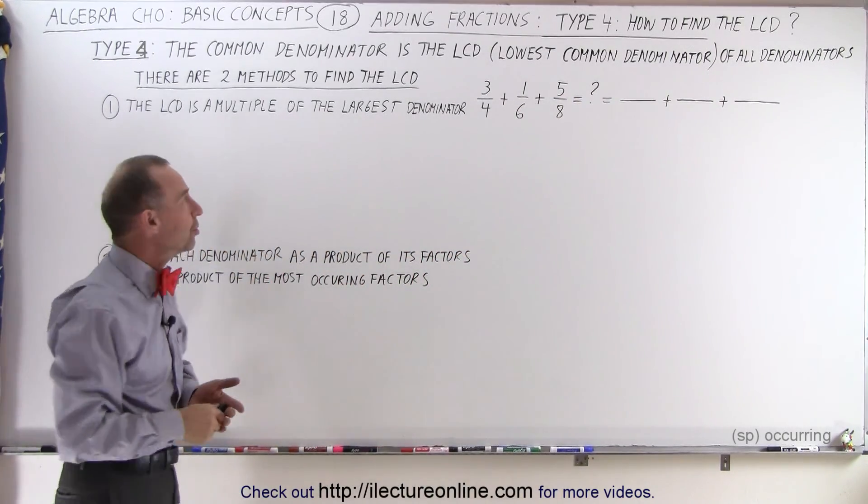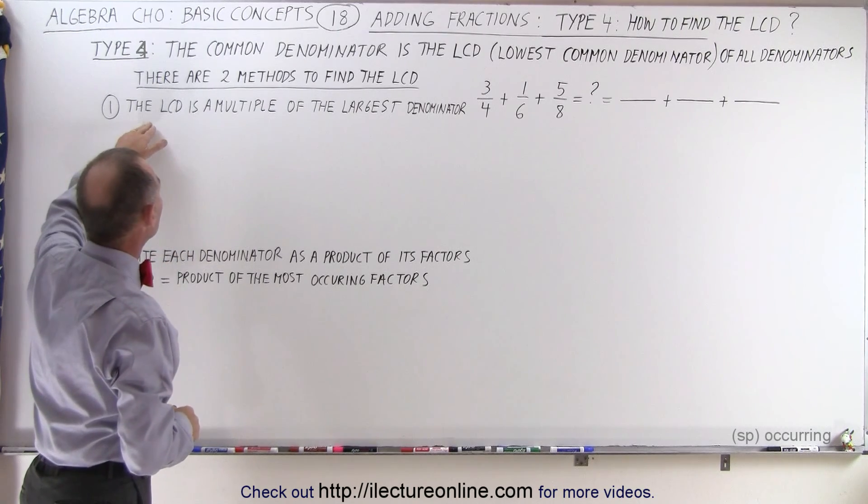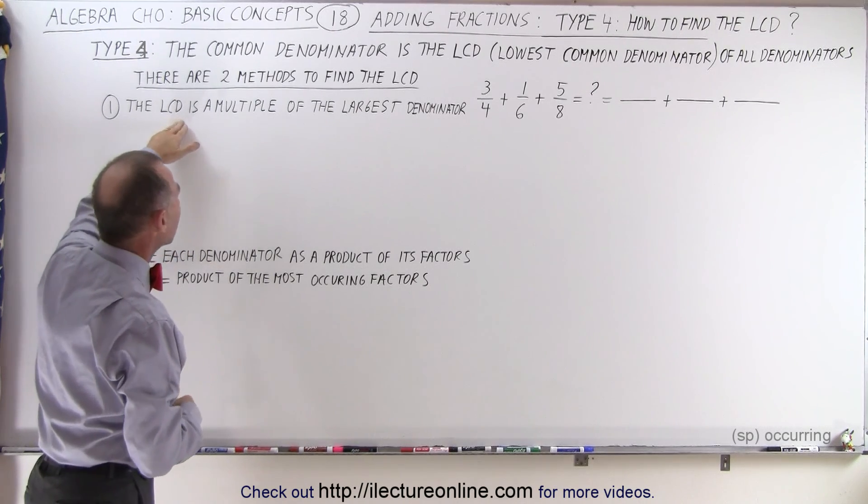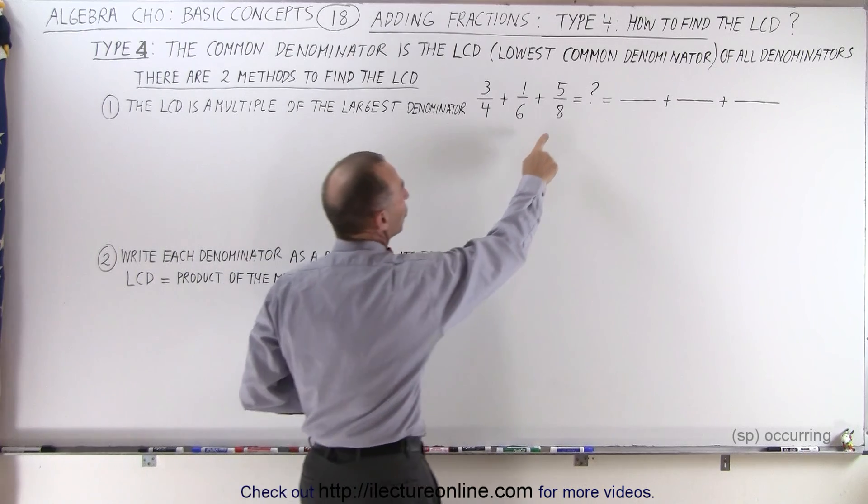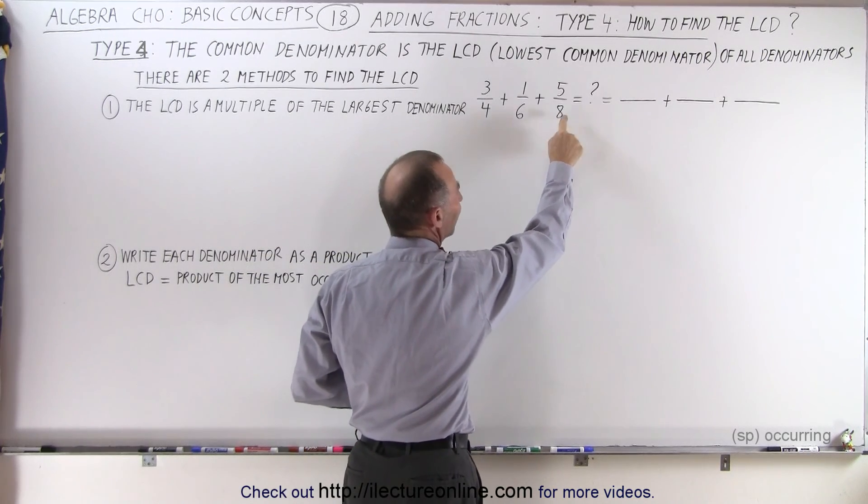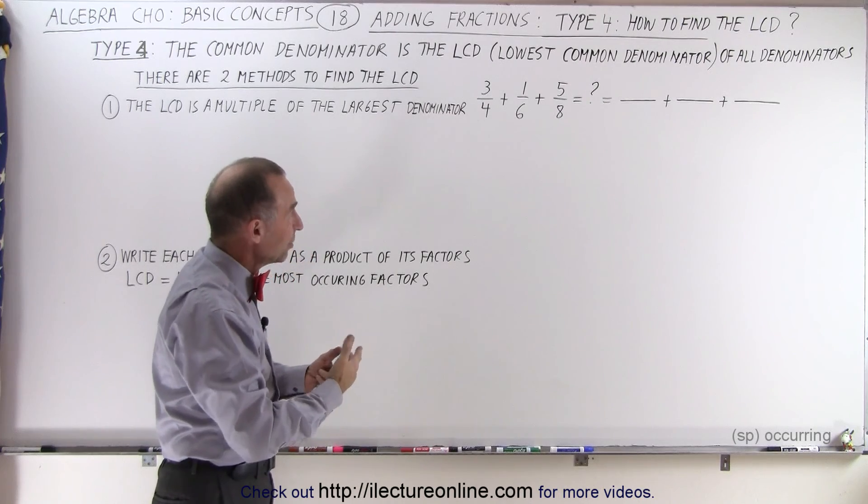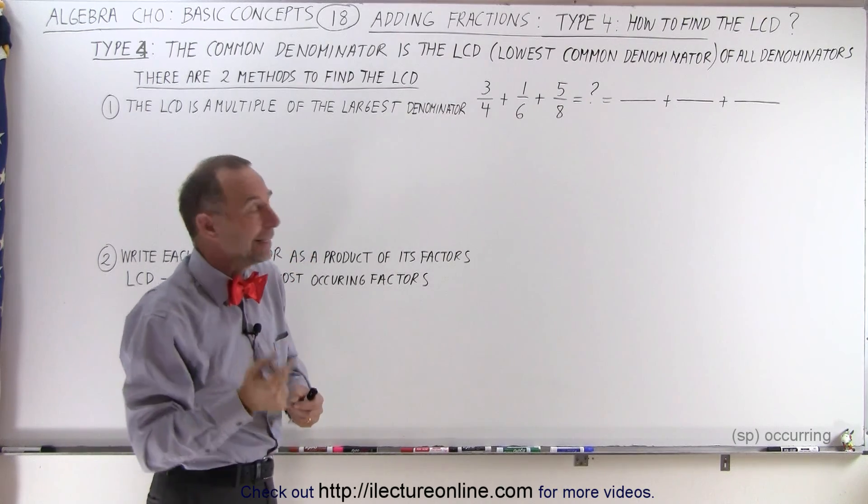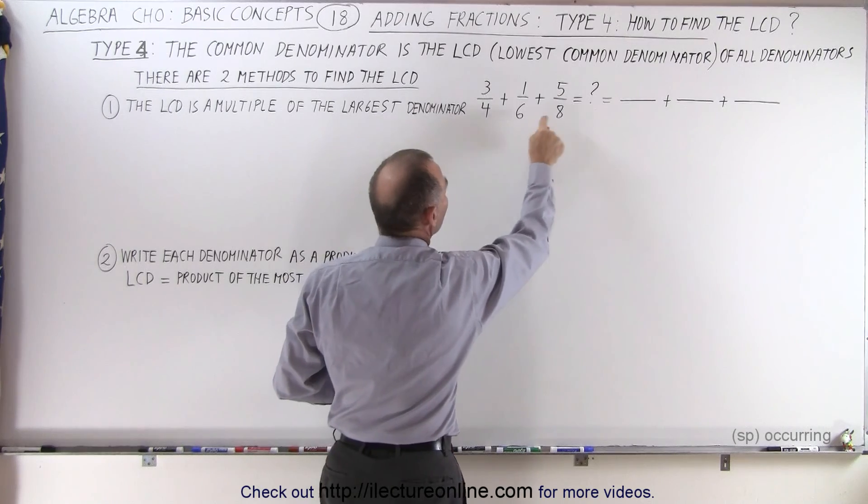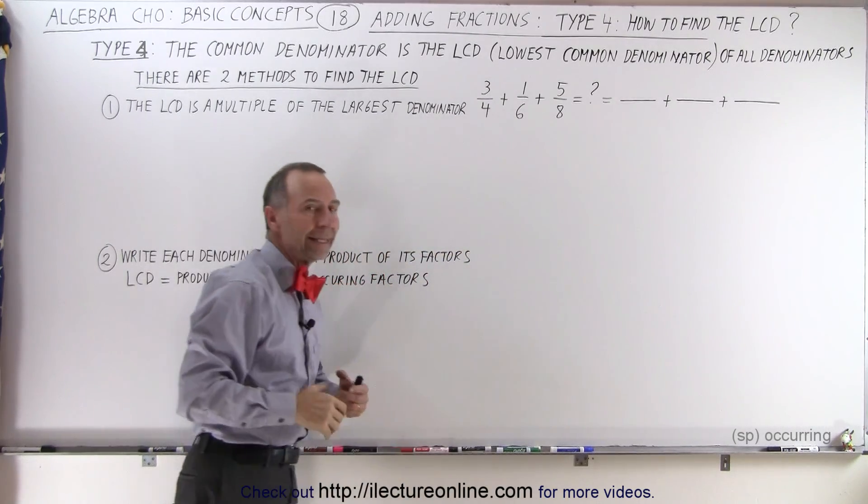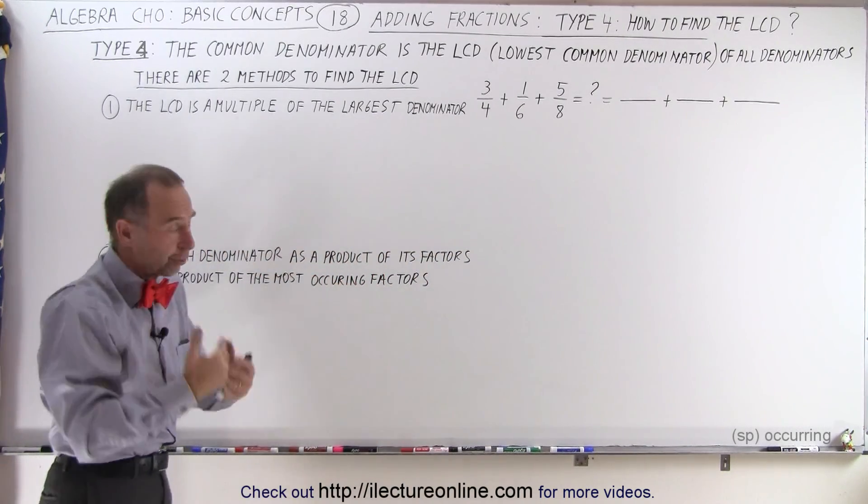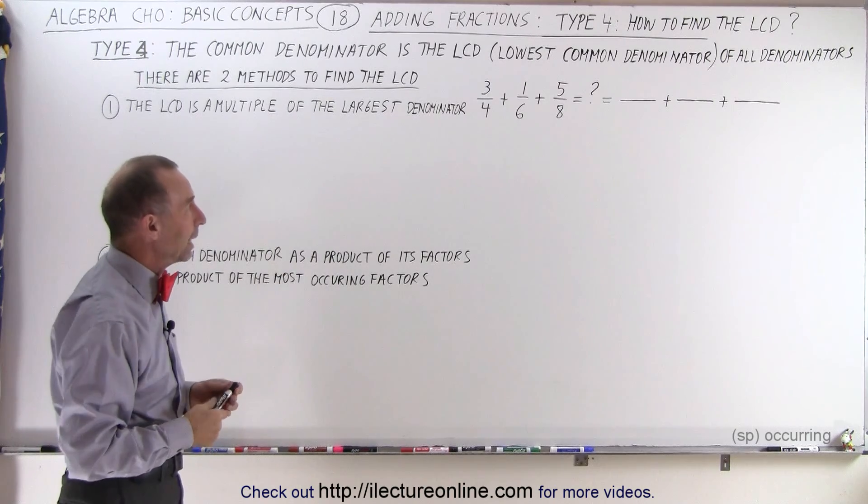Well, there's two methods to do that. The first method is to find the lowest common denominator by taking multiples of the largest one. So in this case, 8 is the largest denominator, so we'll take multiples like 16, 24, 32, and then we check to see if all the other denominators fit into the multiple of that evenly. And if we do, the first one we find is the lowest common denominator.